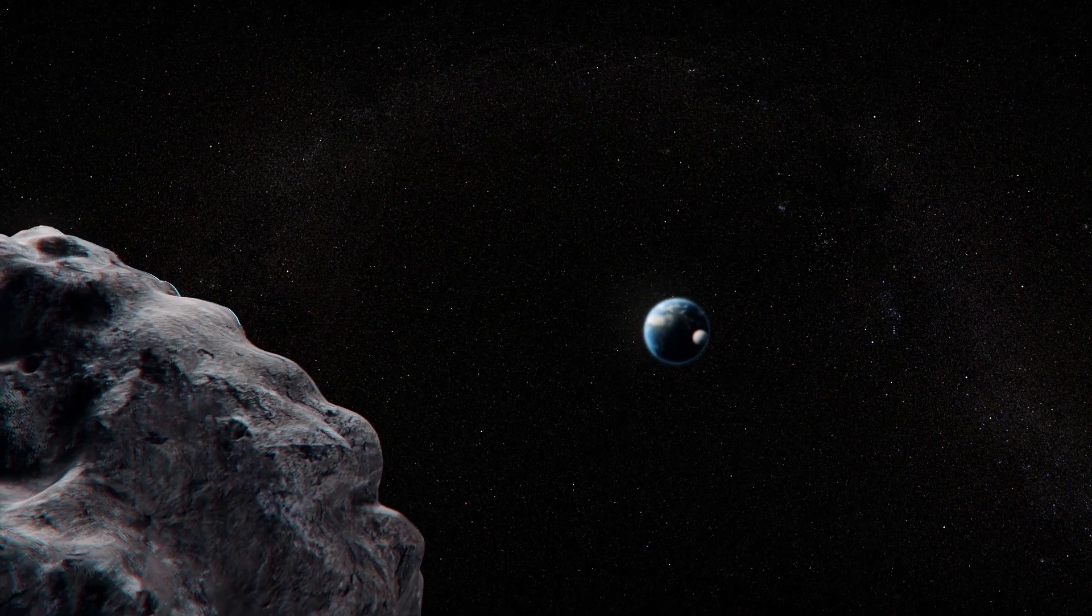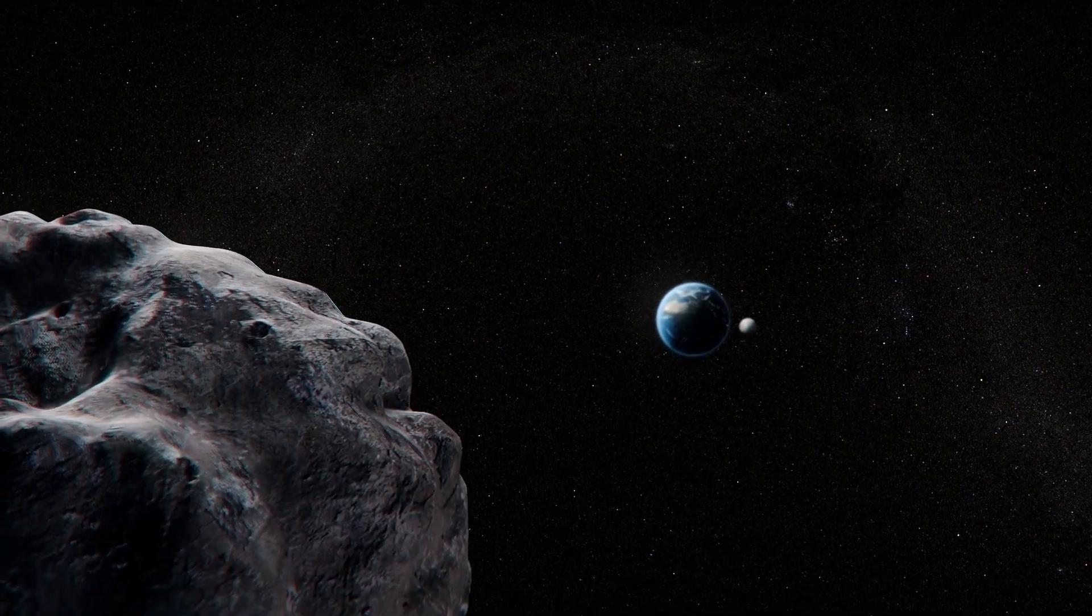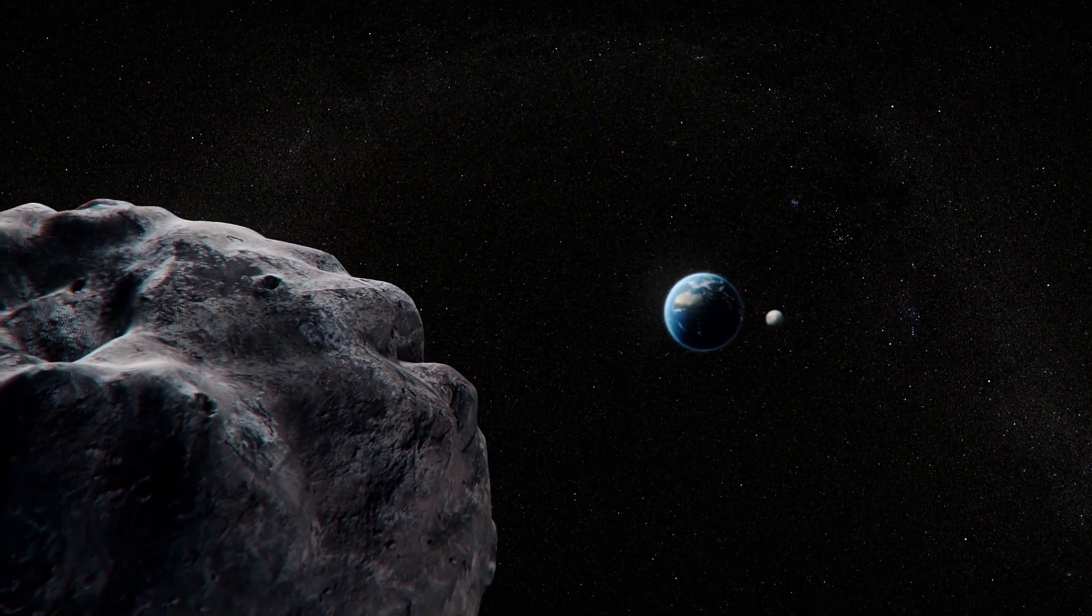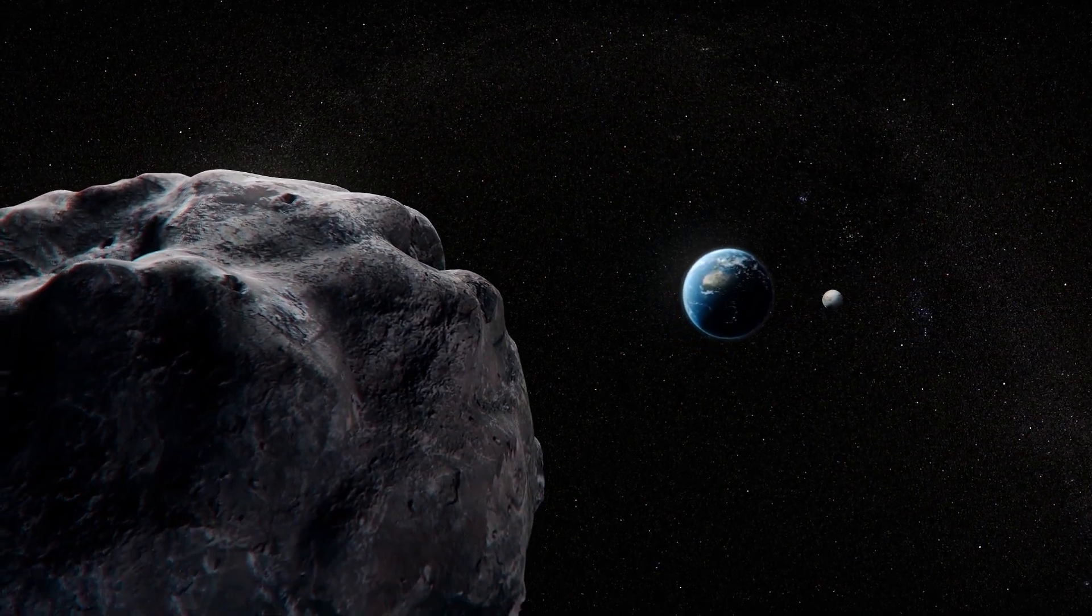A huge asteroid classified as potentially hazardous by NASA is barreling toward Earth at speeds of 31,320 kilometers per hour and will streak past our planet on April 29th.